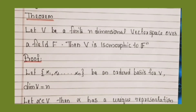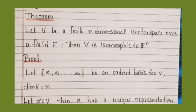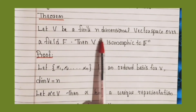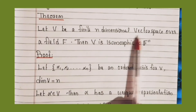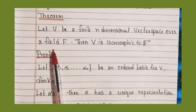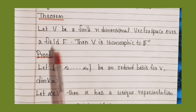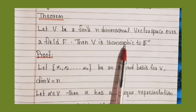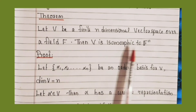Next we are going to discuss a theorem and its proof. Statement: Let V be a finite n-dimensional vector space over a field F. Then V is isomorphic to Fⁿ.